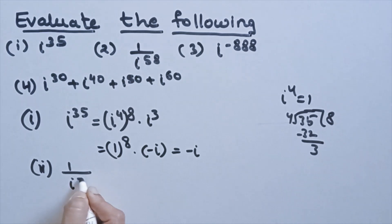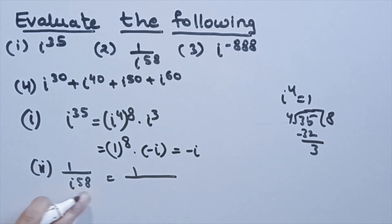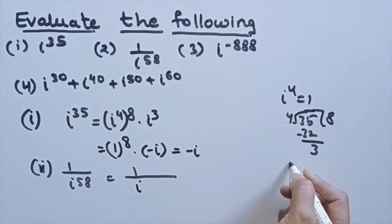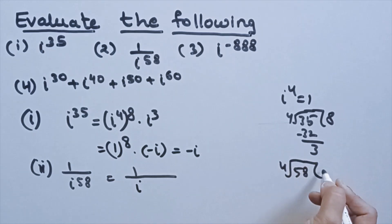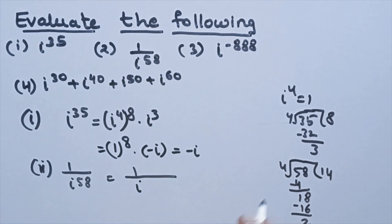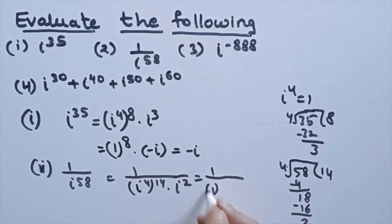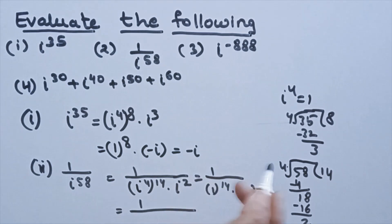Second: 1/i⁵⁸. Divide 58 by 4: 58 = 4×14 + 2, remainder 2. So i⁵⁸ = (i⁴)¹⁴ × i² = 1¹⁴ × (-1) = -1. Therefore 1/i⁵⁸ = 1/(-1) = -1.